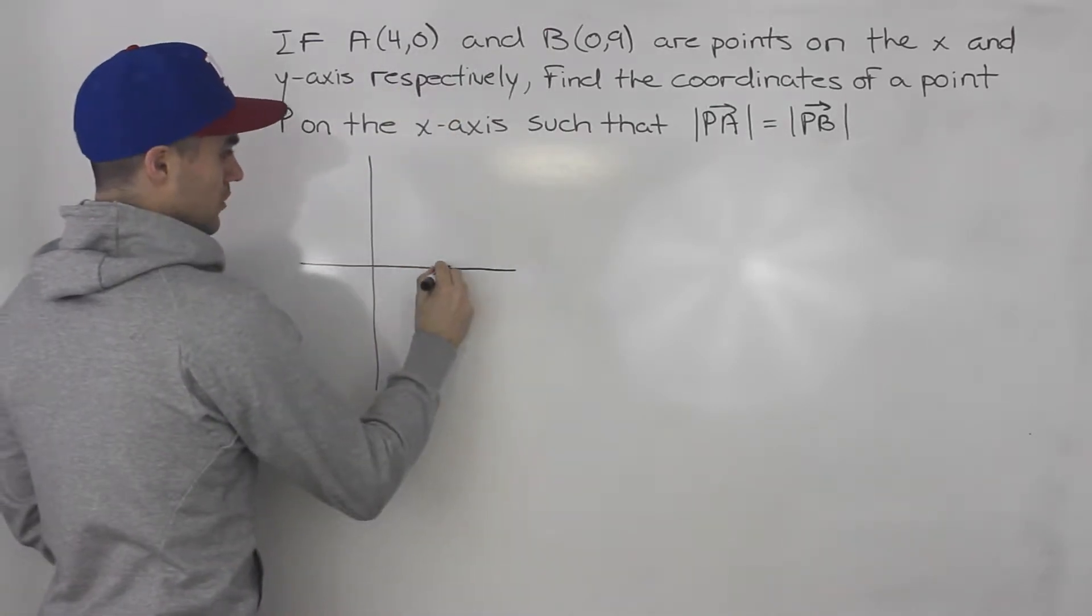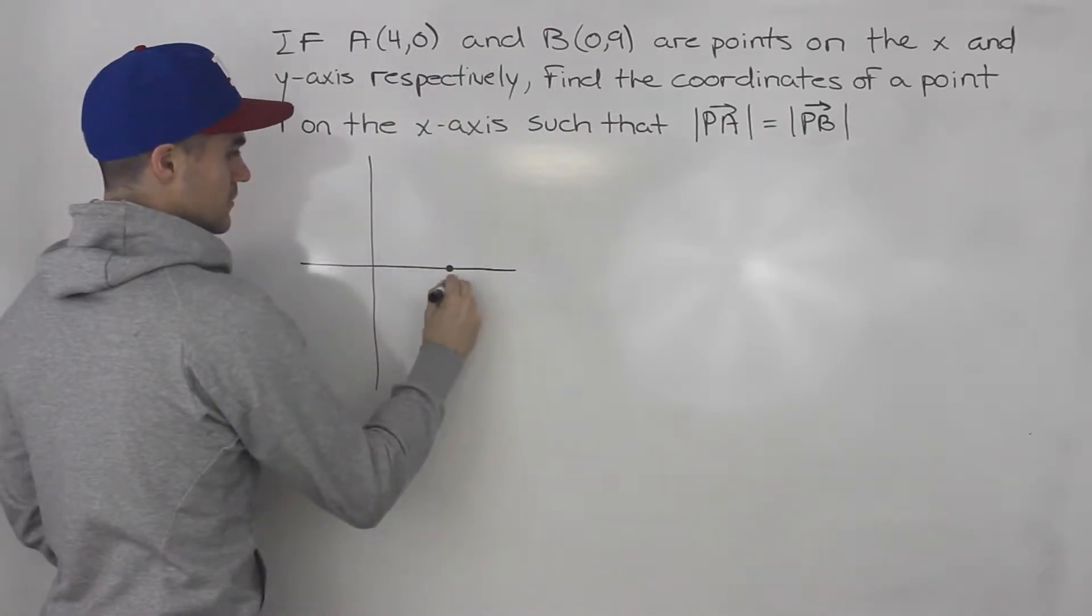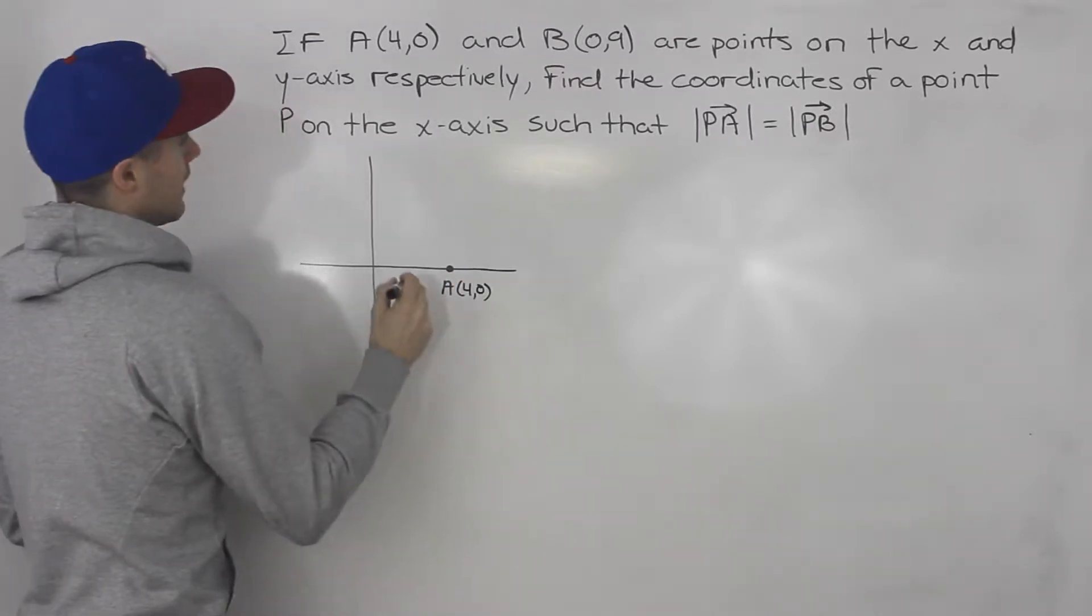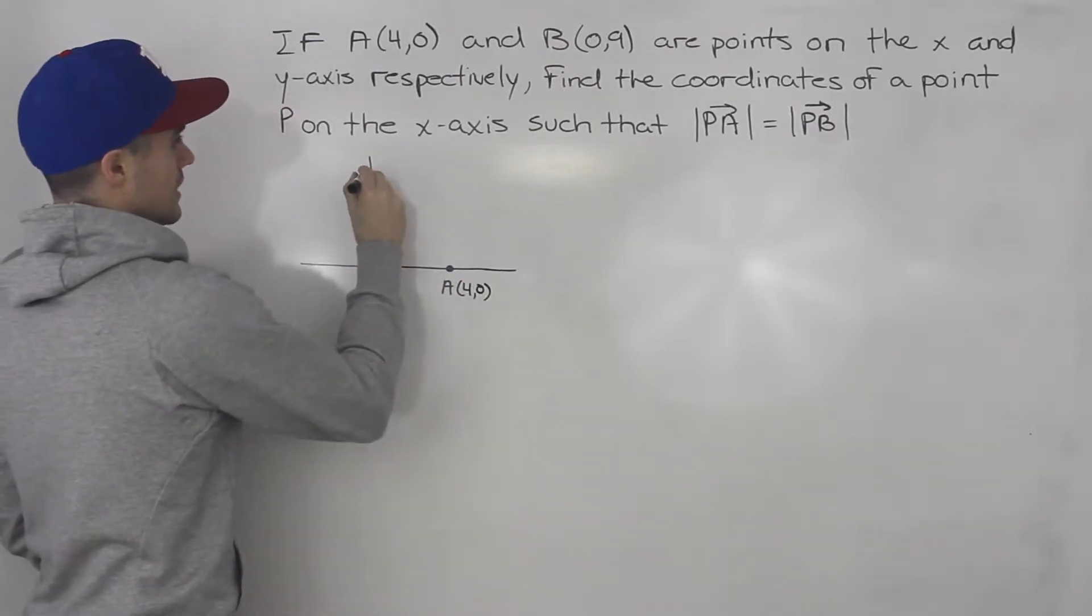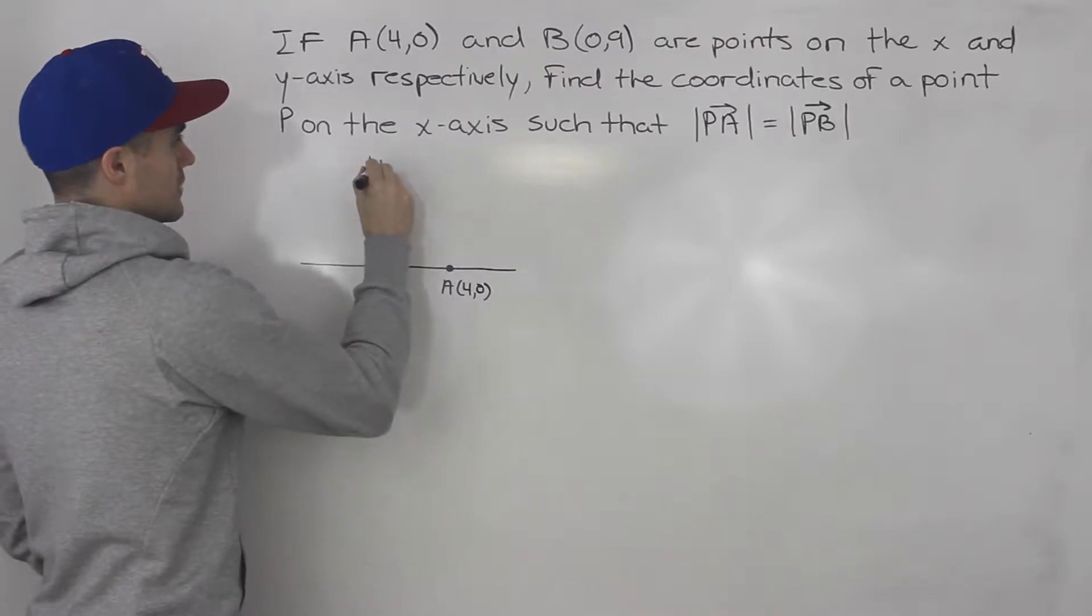Point A at (4,0), let's say it's like right here, and then we got point B at (0,9), so that's like right there.